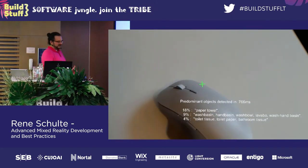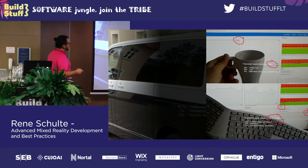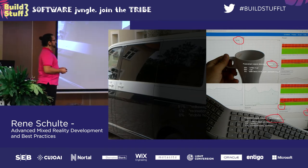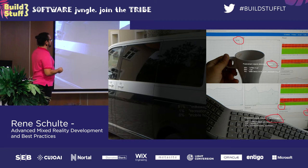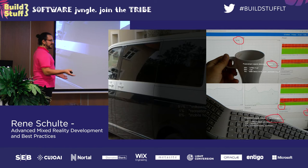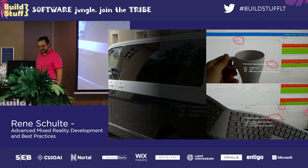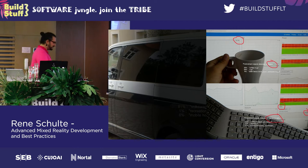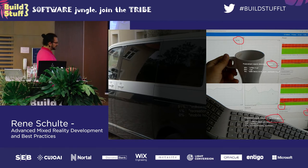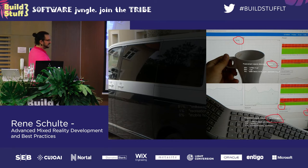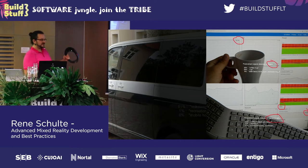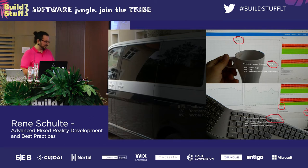With HoloLens 1 and the RS4 update, WinML only had CPU support, giving around 700 milliseconds inference time. With the RS5 update in October, they brought a DirectX 12 driver for HoloLens 1, allowing WinML to run on the GPU — four or five times faster at around 180 milliseconds. Think about running this on HoloLens 2 or more modern devices — it would be even faster.